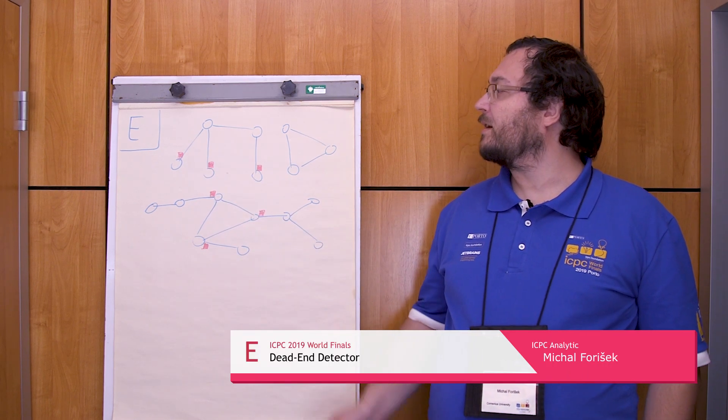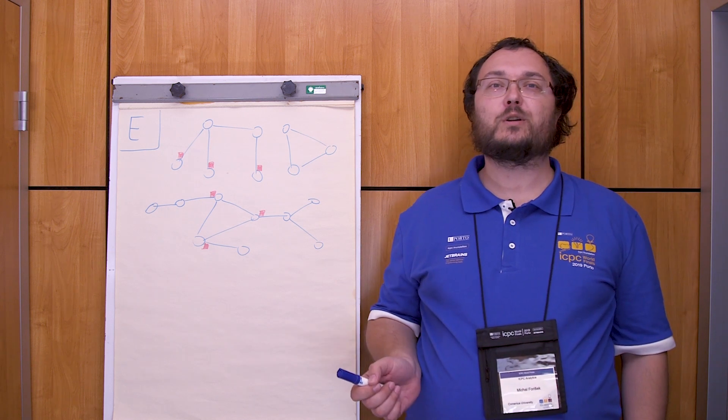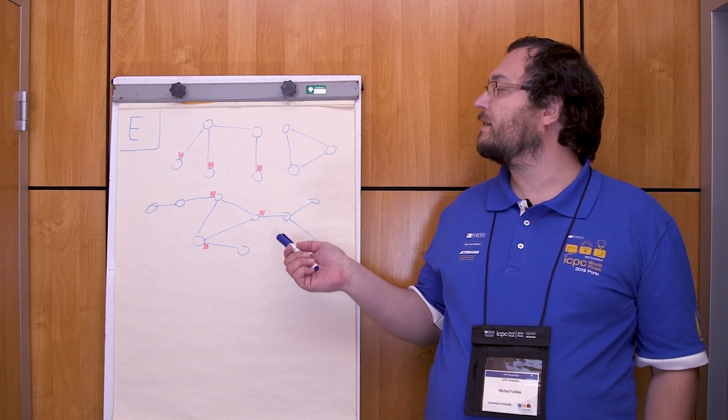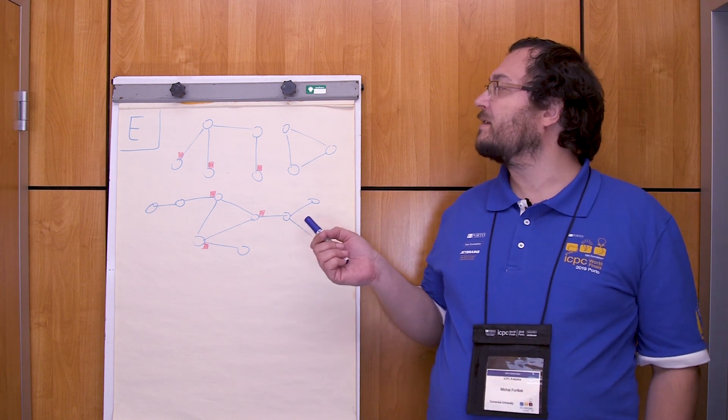In this problem the contestants are given a map of a road network and their task is to detect all of the dead-ends and to place the street signs.